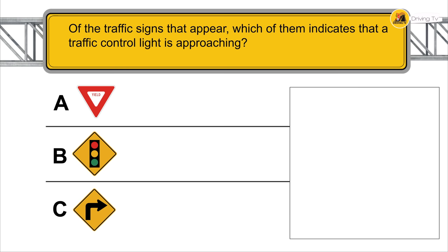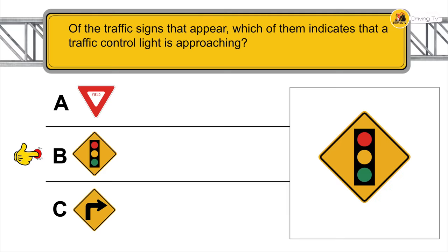Of the traffic signs that appear below, which of them indicates that a traffic control light is approaching?